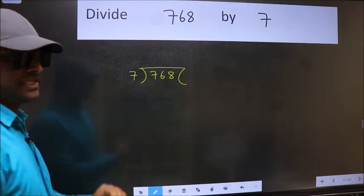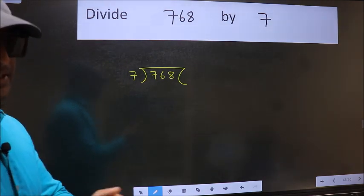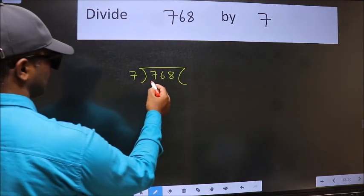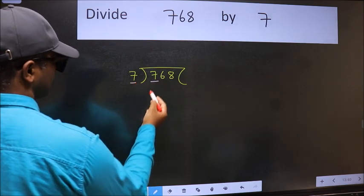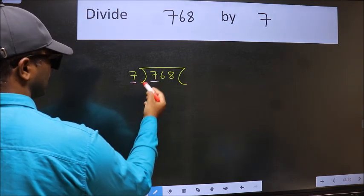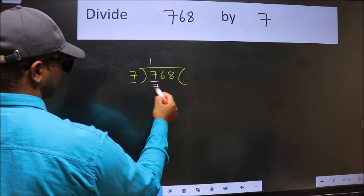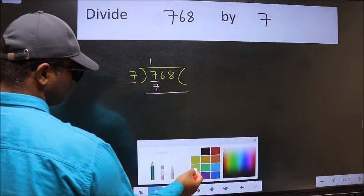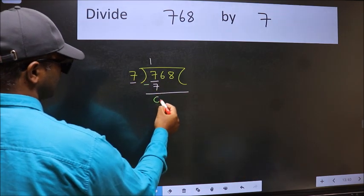This is your step 1. Next, here we have 7 and here 7. When do we get 7 in the 7 table? 7 ones is 7. Now we should subtract. We get 0.